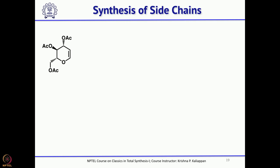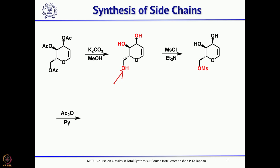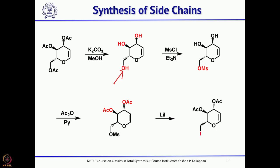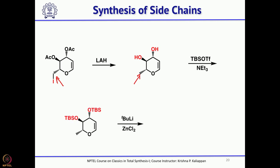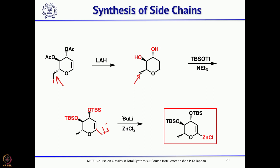The second side chain started with D-glucol. The triacetate was hydrolyzed to get the triol, then the primary alcohol was mesylated and both secondary alcohols were acetylated. The mesylate upon treatment with lithium iodide was converted into the corresponding iodide. Upon treatment with LiH, the iodide was displaced by hydride and the ester was also reductively removed — so from D-glucol the CH2OH is converted into CH3. Both hydroxyl groups were protected as TBS ethers. Then treatment with butyllithium generates a carbanion, which was exchanged with zinc for the Negishi-type coupling.